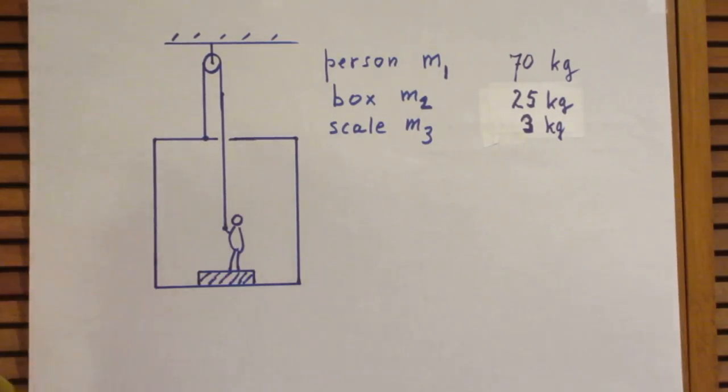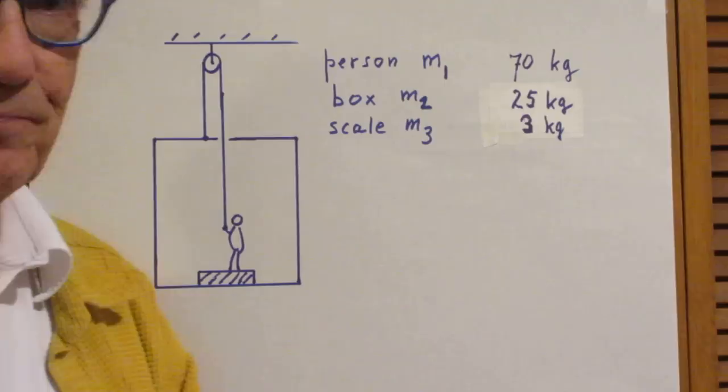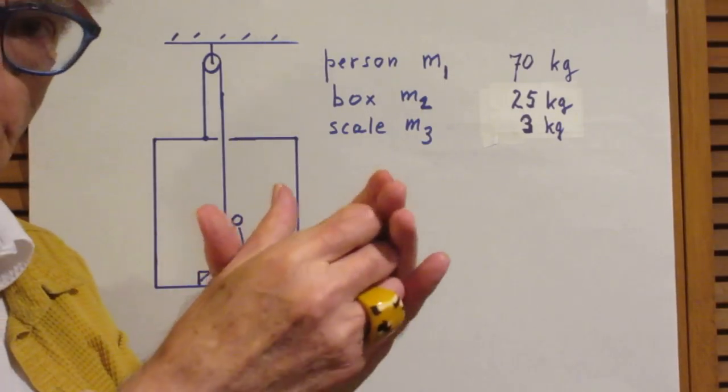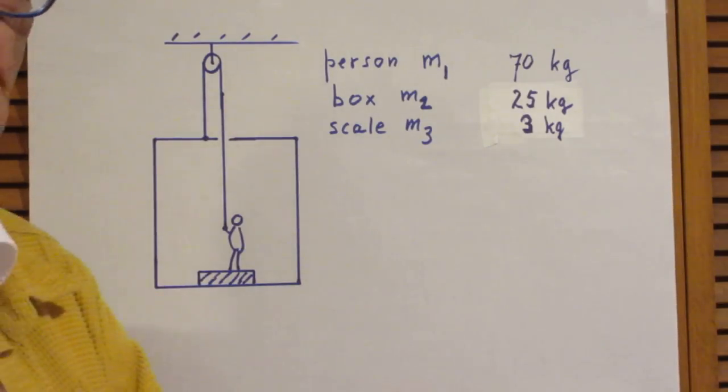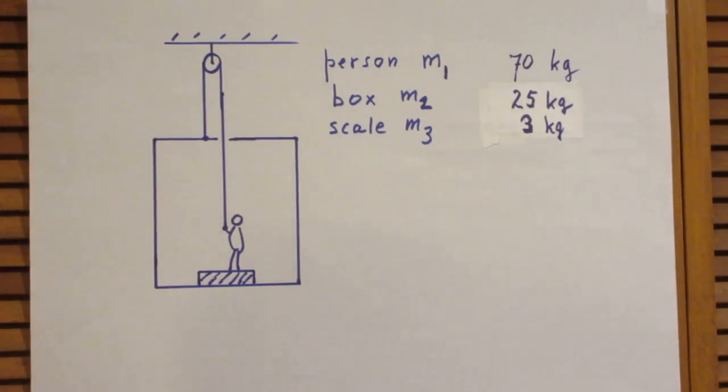What now would the scale here indicate when the person pulls so hard that the whole system is not moving? Okay, that's the problem of the week. It's not so tough.